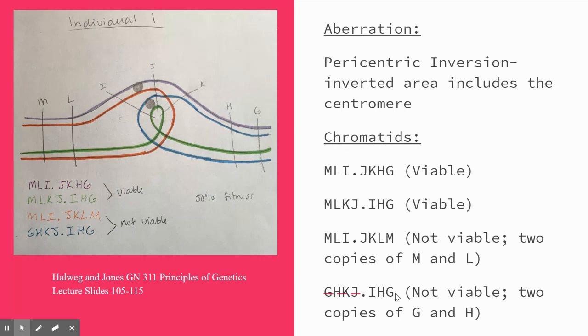This is the resulting crossover event between loci J and K. The chromatids are color coded to be able to visualize easier. The four resulting chromatids are displayed on the right.